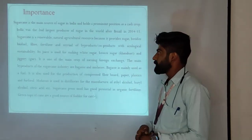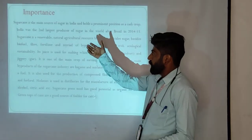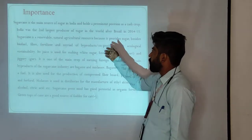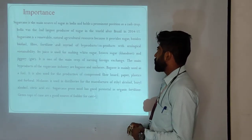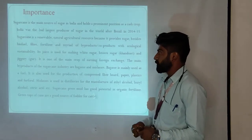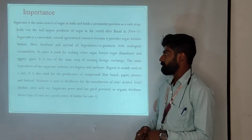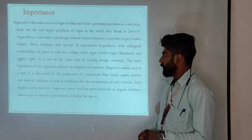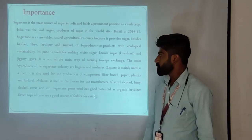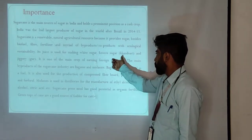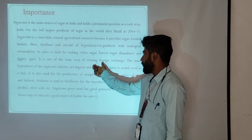Sugar cane is the main source of sugar in India and holds a prominent position as a cash crop. India was the second largest producer of sugar cane in the world after Brazil in 2014-15. Sugar cane is a renewable natural agricultural resource because it provides sugar besides biofuels, fiber, fertilizer, and myriads of byproducts and co-products with ecological sustainability. It is used for making white sugar, brown sugar known as khansari, and jaggery known as gol.